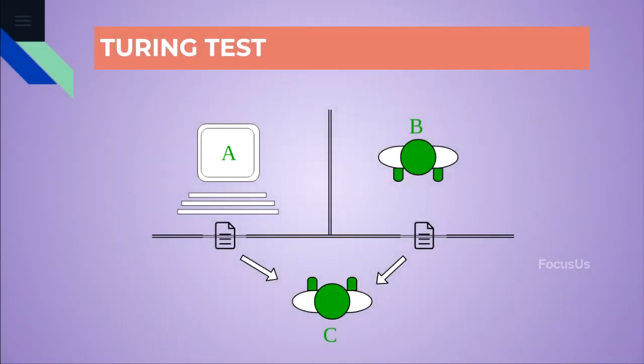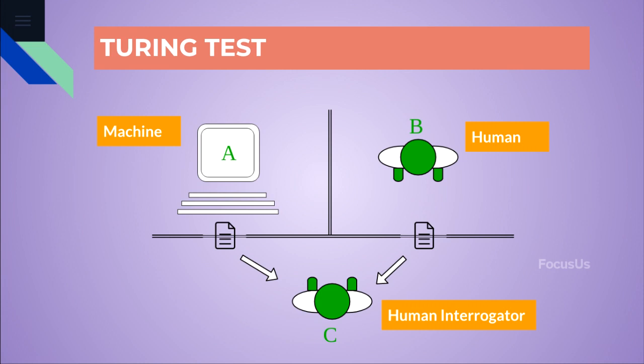In the Turing test setup we have a human interrogator, a human, and a machine. The interrogator cannot see or distinguish between the human and machine since they are divided. The interrogator gives questions to both the human and the machine and gets responses from both. All questions and answers are in written/text format. If the interrogator cannot tell whether the response came from the person or the machine, then the machine has passed the Turing test.